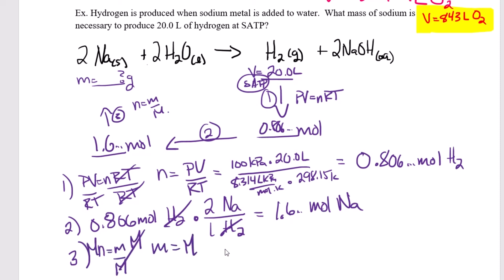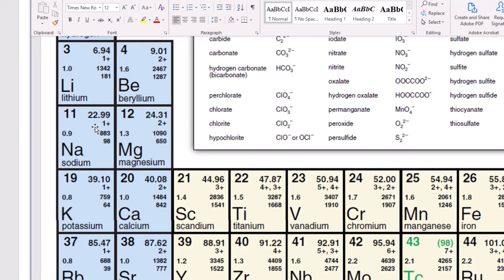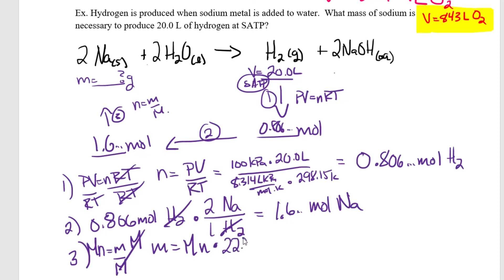And then step three, let's turn these moles of sodium into a mass of sodium. So to find the mass, I can take my molar mass multiplied by my number of moles. Now a common mistake here is to multiply the molar mass of sodium by its coefficient. You never do that. You don't multiply a molar mass by a coefficient. In stoichiometry, the coefficient only comes into play during this mole ratio step. So the molar mass of sodium is 22.99. That's it. It doesn't get multiplied by two. So my molar mass, 22.99 grams per mole multiplied by my number of moles, which was 1.6. And that gives me, I've got three sig digs here. So 37.1 grams of sodium. So if I want to produce 20 liters of hydrogen at SATP, I need to react 37.1 grams of sodium.